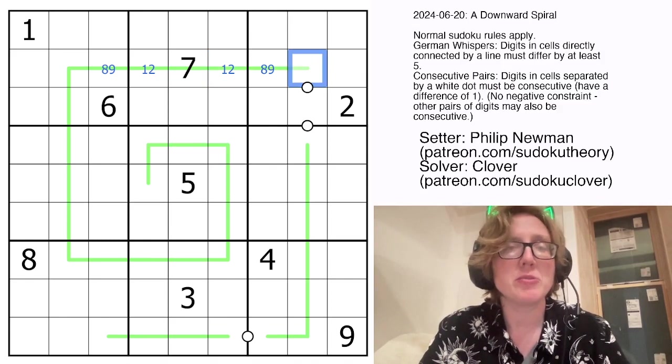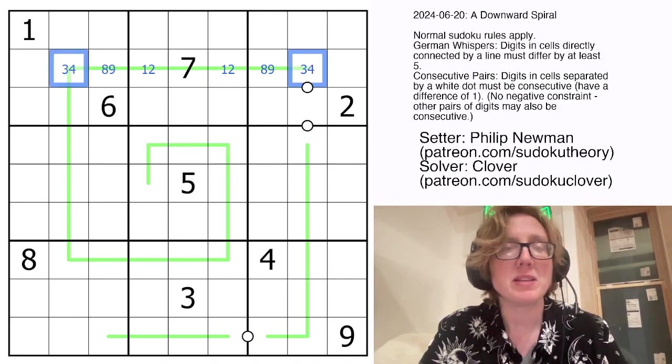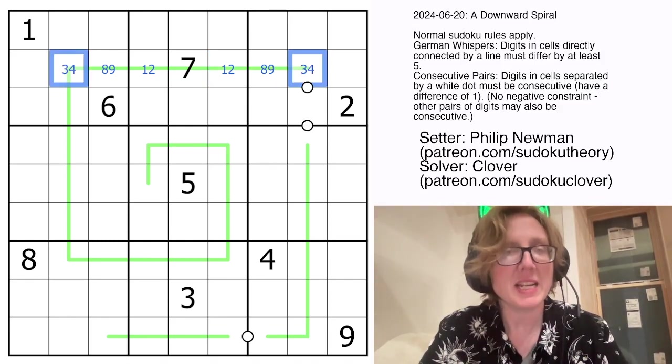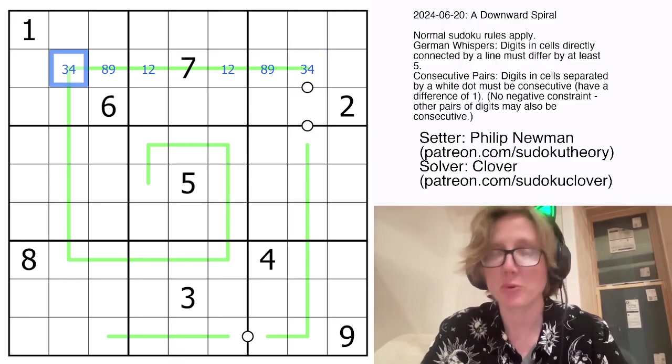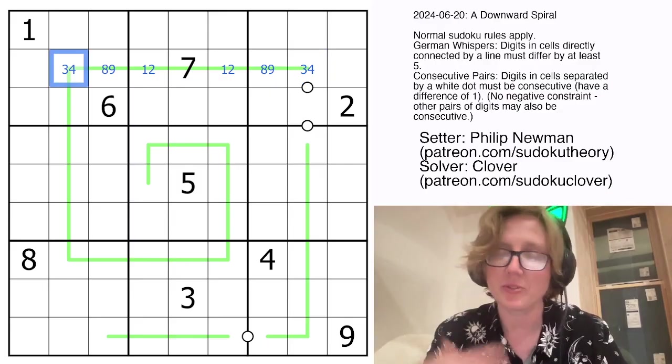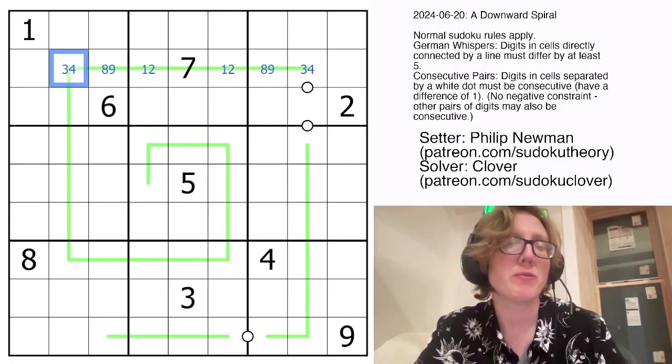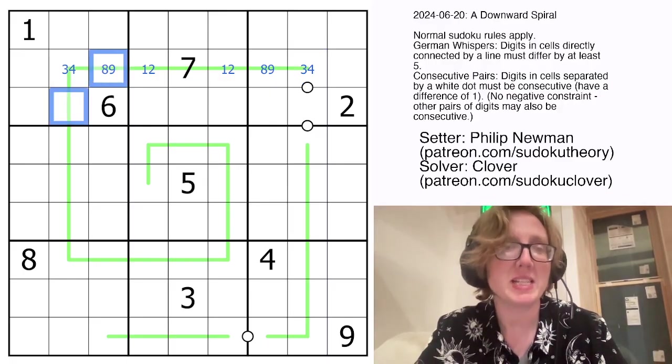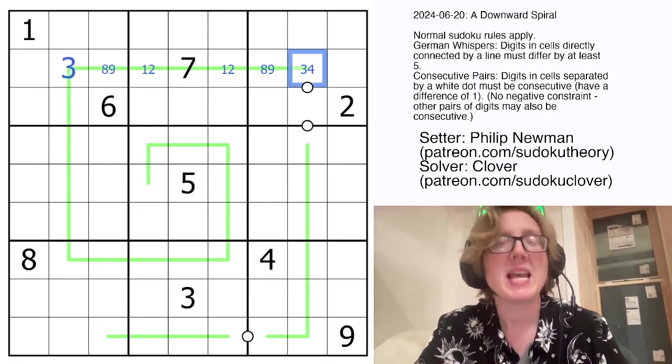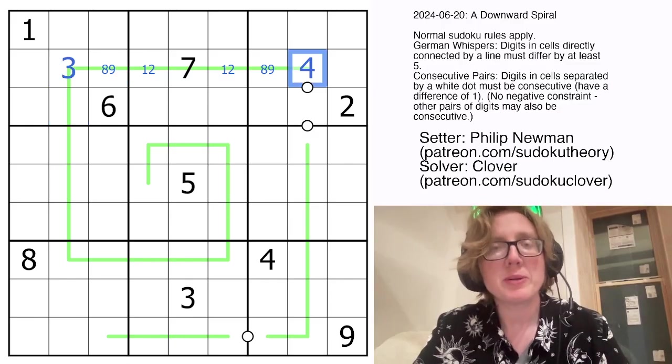So, now we need to place low digits on the ends. Those are going to be 3 and 4. Now, this can't be 4 because 4 can only ever be next to one number. It can only ever be next to 9. And so, if this was 4, both of these cells would contain 9s, which is not valid. So, that's a 3. That's a 4. Now, the question is, does this go 4, 3, 2, or does it go 4, 5, 6?